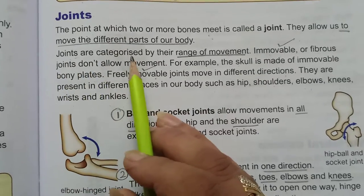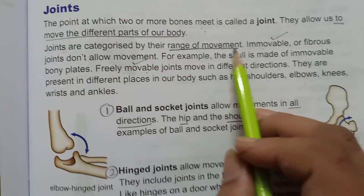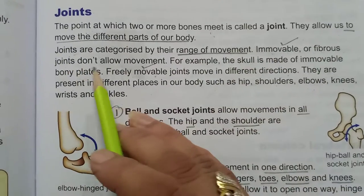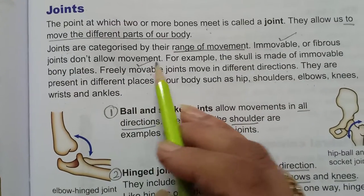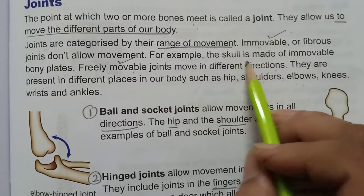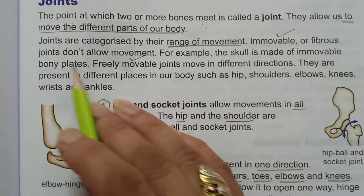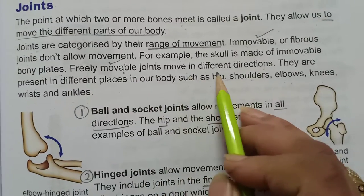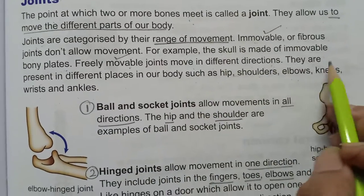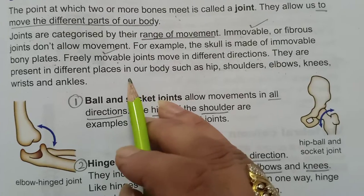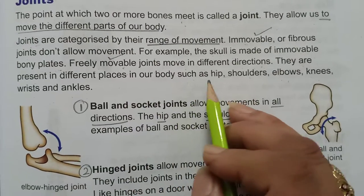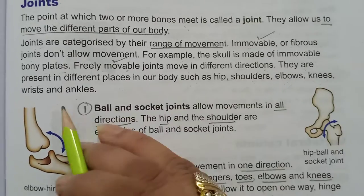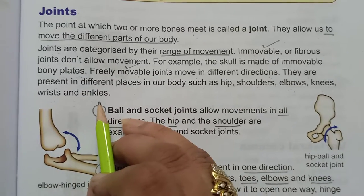Joints are categorized by their range of movement. Immovable or fibrous joints don't allow movement — for example, the skull is made of immovable bony plates. Freely movable joints move in different directions. They are present in different places in our body such as the hip, shoulders, elbows, knees, wrists, and ankles.